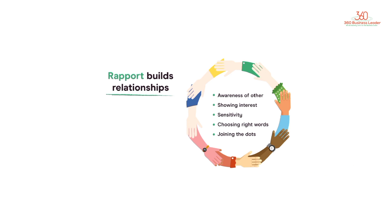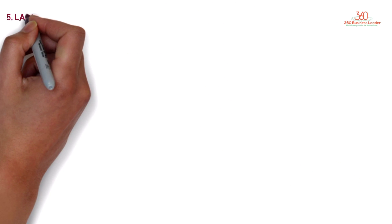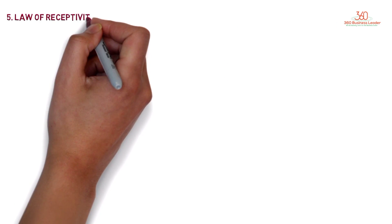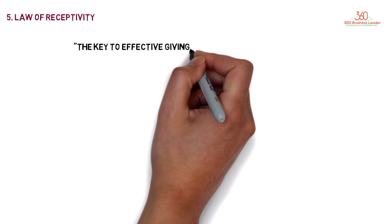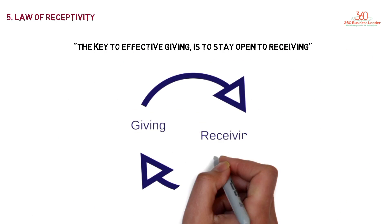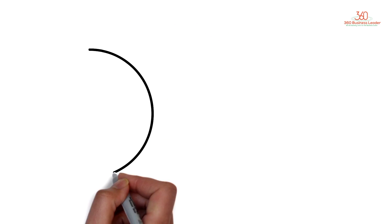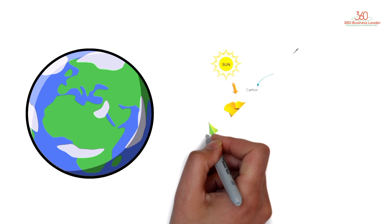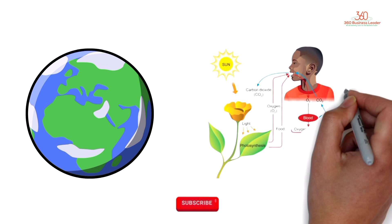Fifth Law - Law of Receptivity: The key to effective giving is to stay open to receiving. Everything - giving can happen only because it is also receiving. All around the globe, all humanity is breathing in oxygen and breathing out carbon dioxide, as is the rest of the animal kingdom. However, the plant kingdom is doing exactly the opposite. Their giving is our receiving.